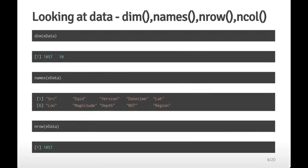Here are the very first things you always run when you load a data set into R. First, look at the dimensions of the data frame. Using dim(edata) I see there are 1,057 rows and 10 columns. I do this first because if I know there are 11 variables and I only see 10, there was a problem reading the data into R. Similarly if there should be 10,000 rows and I only see 1,057, that can indicate the data was read in incorrectly.